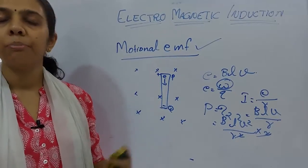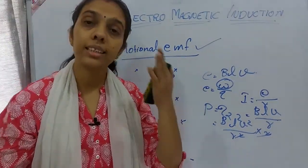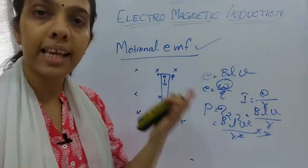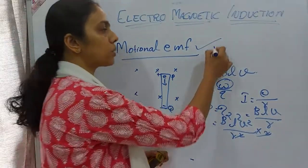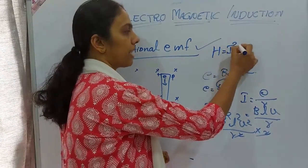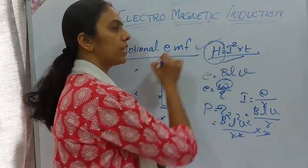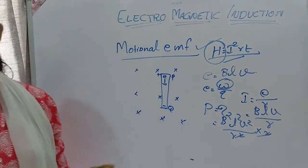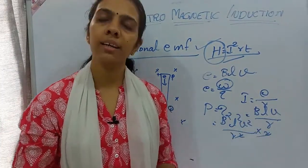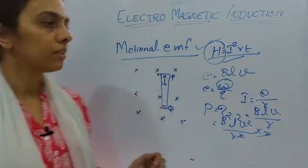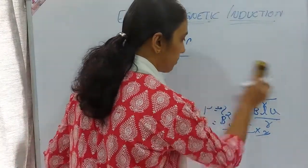We can also express this as the heat energy developed per second. Heat energy H = I²RT, so heat energy per second equals power, which is B²L²V²/R. This is how we find the power developed in the circuit.